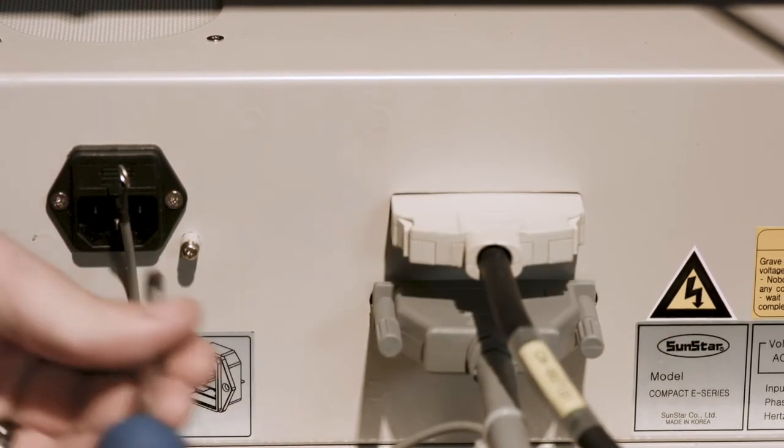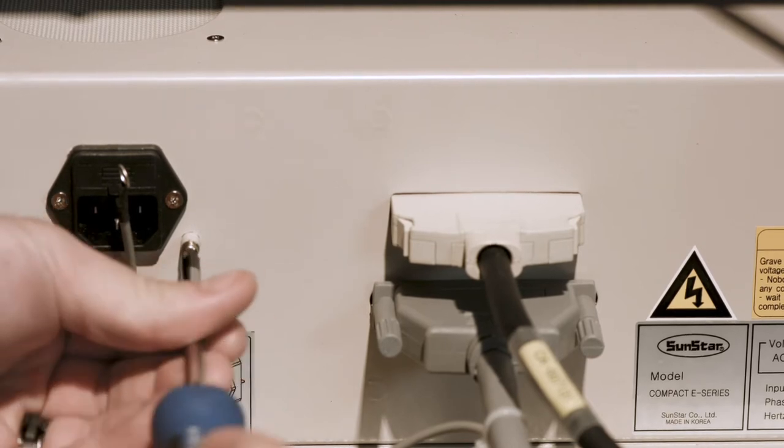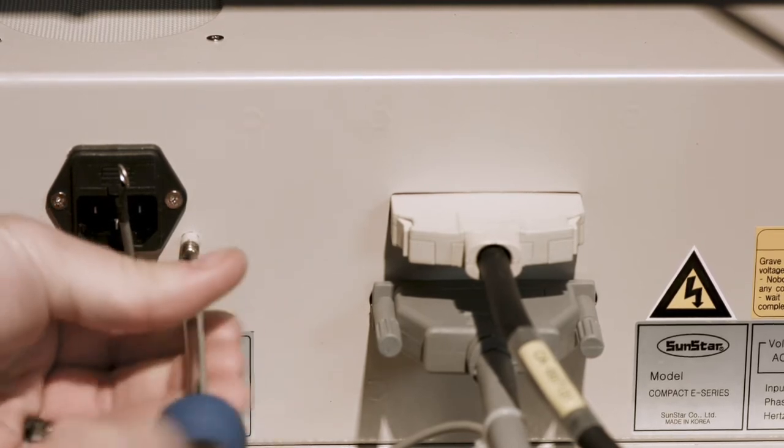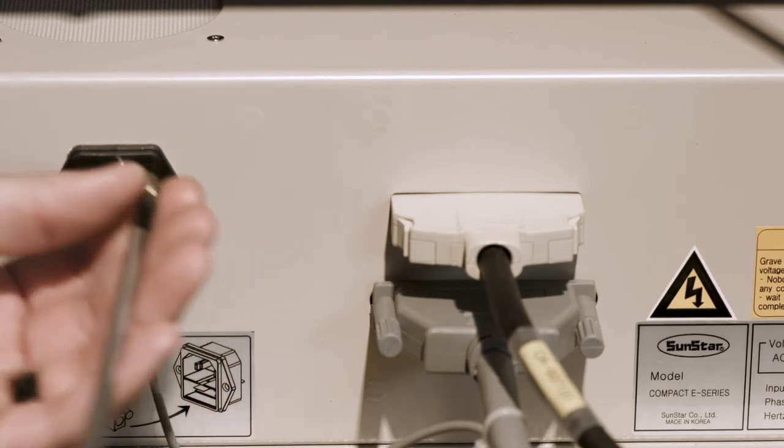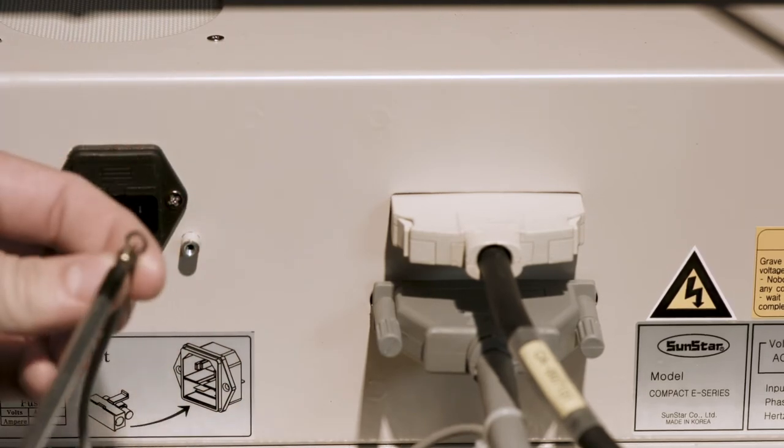Grab the Phillips head screwdriver and loosen the ground screw. Then we will attach our ground cable to the ground screw.